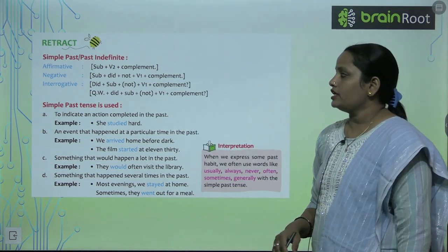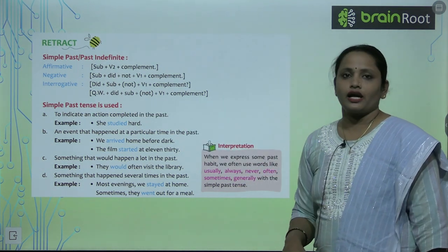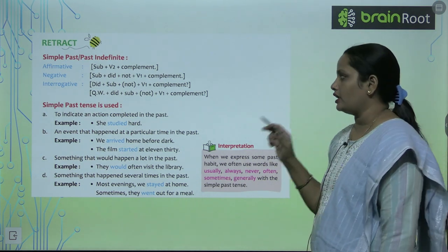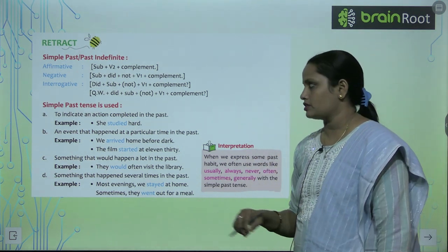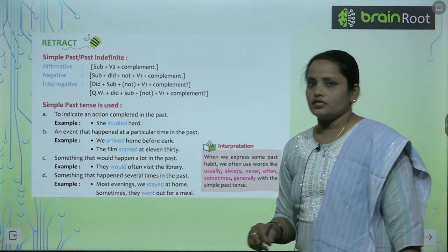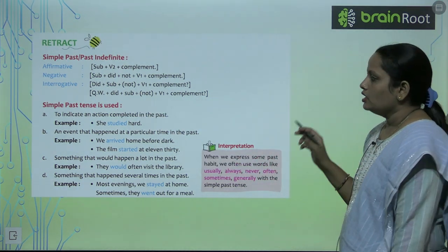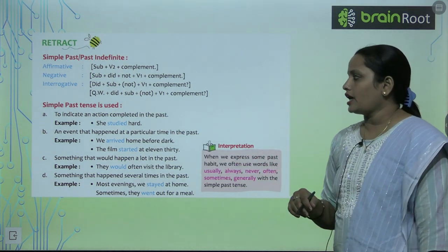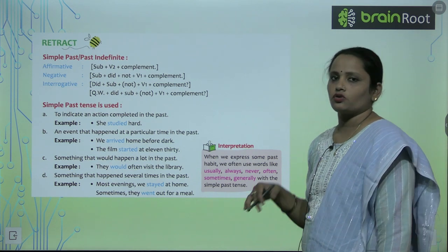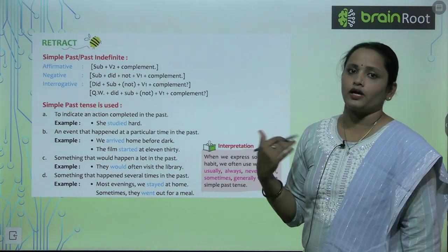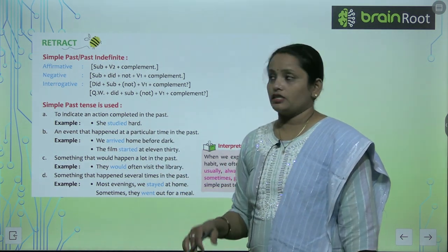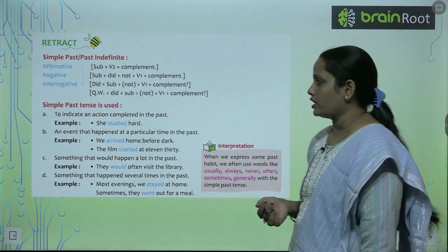Again, we can also use: question word, 'did', subject, 'not', and then complement. Simple past tense is used to indicate an action completed in the past — something that has already been done. For example: 'She studied hard' means she worked very hard previously.